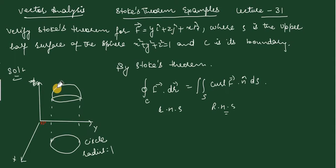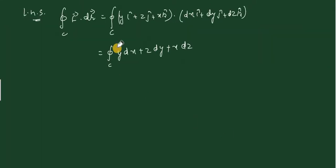Now, C is the boundary of the sphere. What is the boundary? It's a circle of radius 1. To convert this using polar coordinates, x equals r cos theta with radius 1, so x equals cos theta. This implies dx equals minus sin theta d theta, and y equals sin theta.